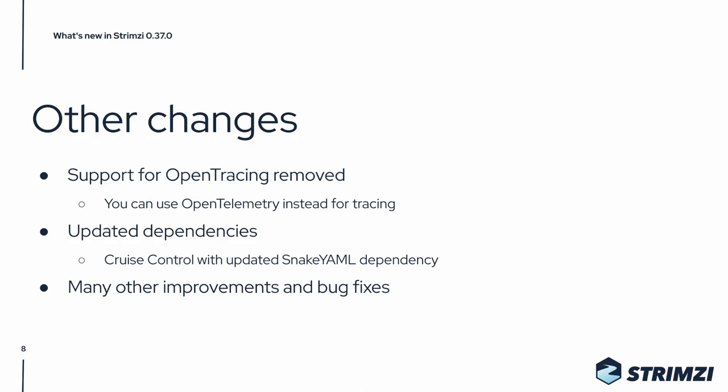There are also many other smaller changes. The support for OpenTracing has been removed, and if you want to use tracing, please use the OpenTelemetry support instead. We also updated many dependencies. One notable change is the update to Cruise Control, which finally has a release with an updated SnakeYAML dependency that no longer contains the SnakeYAML CVE. There are also many smaller improvements and bug fixes.